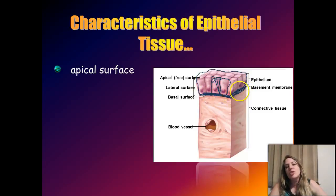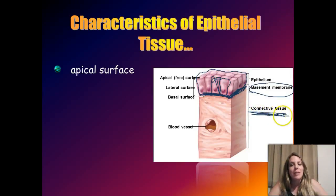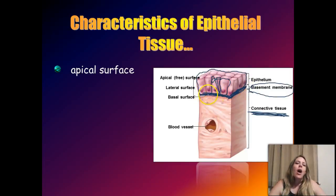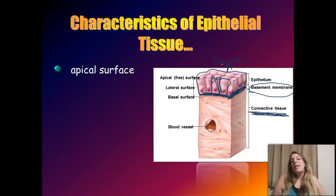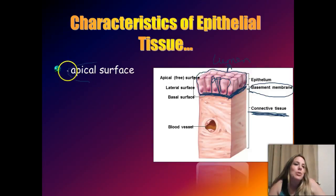All epithelial cells line up at the bottom — this is called the basal surface, or sometimes the basolateral surface. There's a substance made of proteins and complex sugars called polysaccharides there, called the basement membrane. The basement membrane connects the epithelial tissue layer to the underlying layer of connective tissue. The other side — facing the lumen — is called the apical surface.